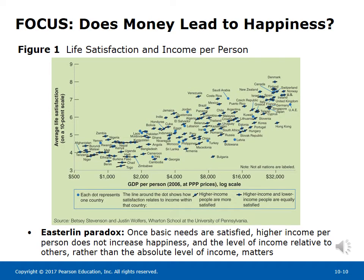Focus: Does money lead to happiness? Qualified yes. In relatively poorer countries, happiness tended to be higher the higher the level of income per person. In rich countries, there appeared little relation between income per person and happiness. This was observed by Richard Easterlin, one of the first economists to look systematically at the evidence, and is known as the Easterlin paradox. Once basic needs are satisfied, higher income per person does not increase happiness, and the level of income relative to others — rather than the absolute level — matters.